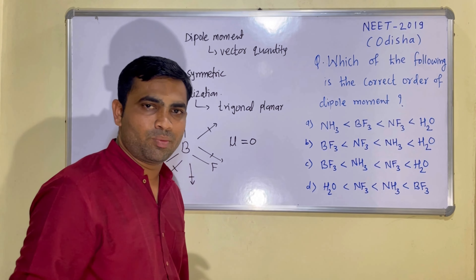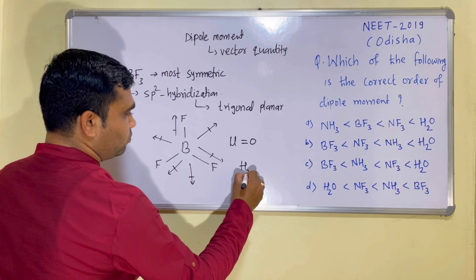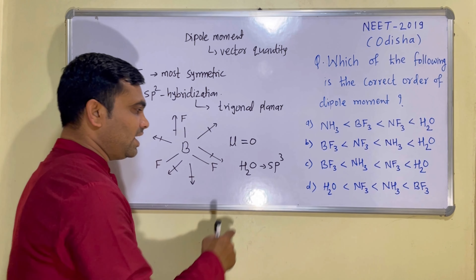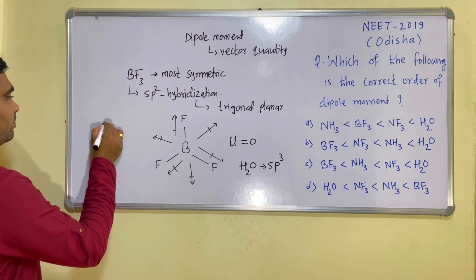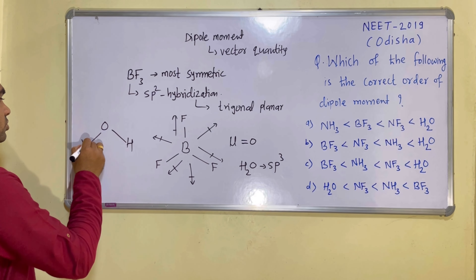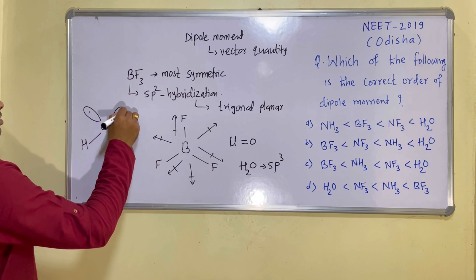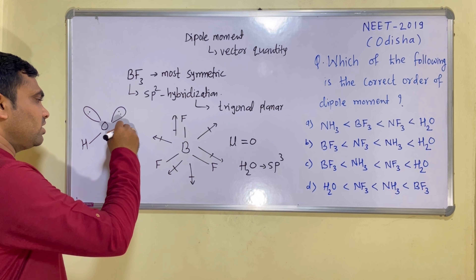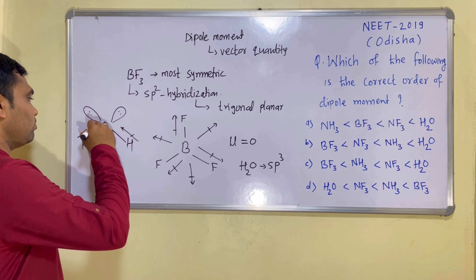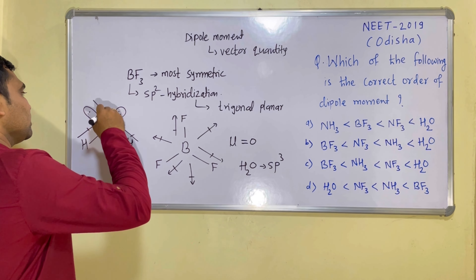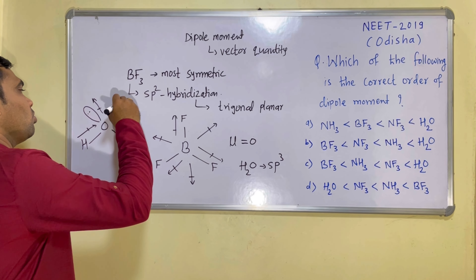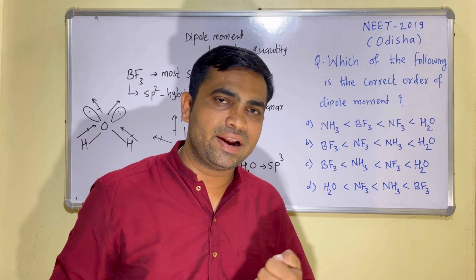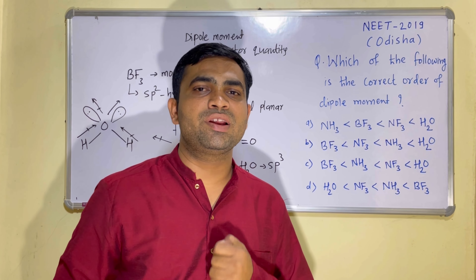Now let's look at the water molecule. Water has a bent shape with SP3 hybridization. Oxygen is at the center with two hydrogen atoms and two lone pairs. The O-H bond dipole moment vectors both point towards oxygen, and the lone pair vectors are also oriented in the same direction. Since all vectors are oriented in the same direction, they get added and produce a resultant vector of very large magnitude.